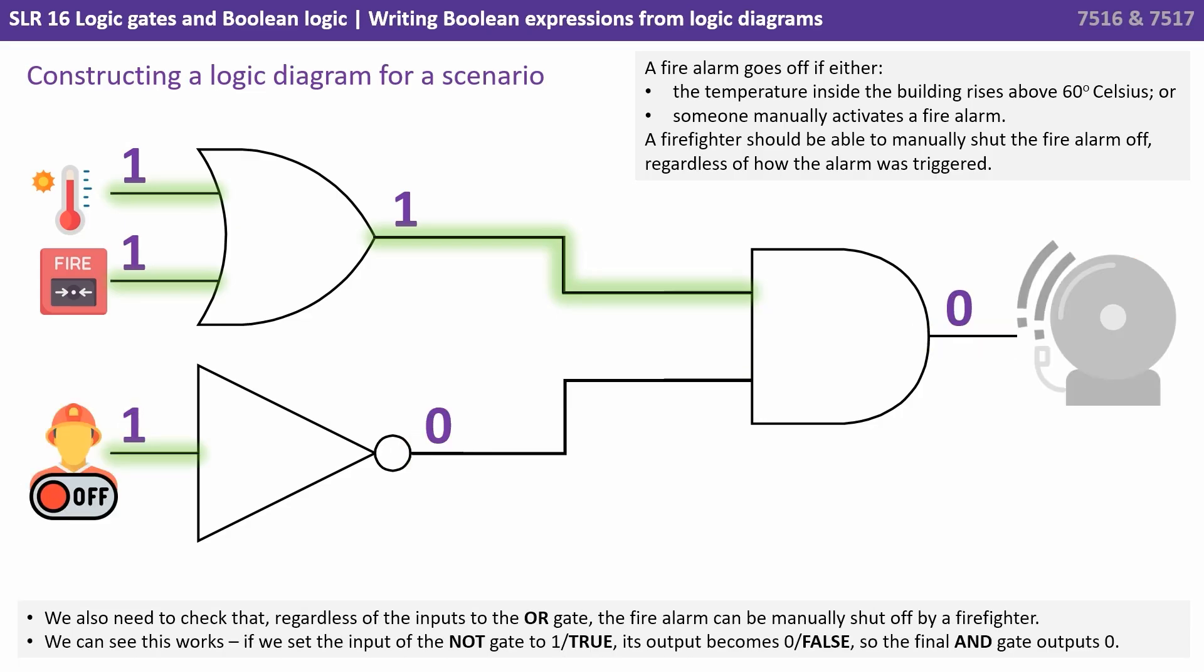We also need to check that regardless of the inputs to the OR gate the fire alarm can be manually shut off by a firefighter and we can see this works. If we set the input of the NOT gate to one or true, its output becomes zero or false and so the final AND gate's output will now also become zero and false.